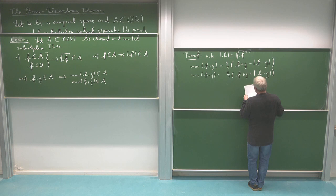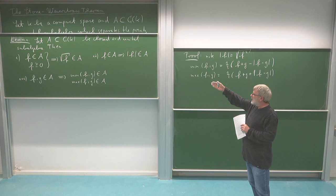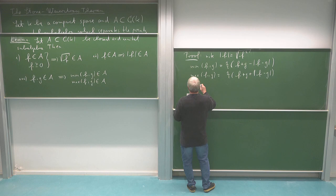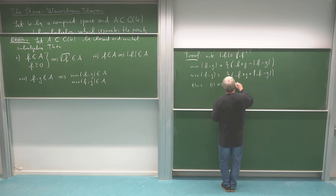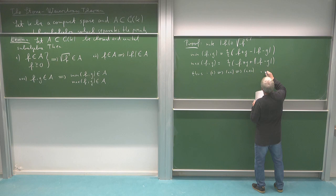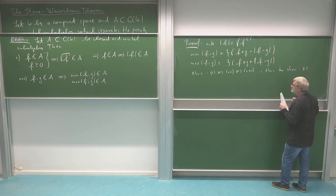So this means: if I have (1) — that the square root of a positive function is in A — then this implies (2), that the absolute value is in A, and this implies (3), that the min and max are in A. The only thing I really have to show is (1).